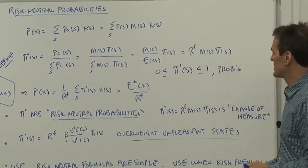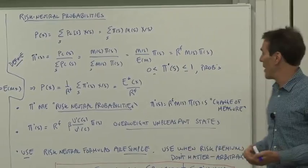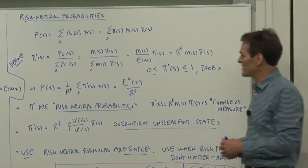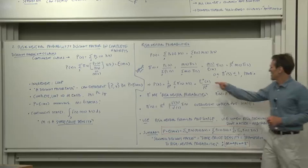And by the definition here, you can see, since it's contingent claims price divided by all contingent claims prices, that the risk neutral probabilities have to be between 0 and 1, and they sum up to 1, so that they are, in fact, a genuine set of possible probabilities, even though they're not the real probabilities.